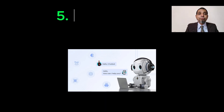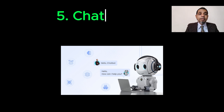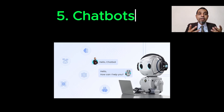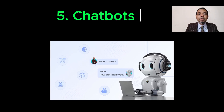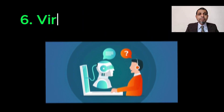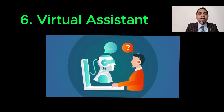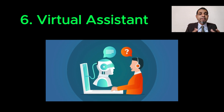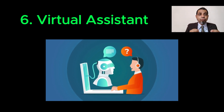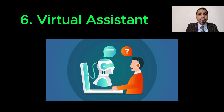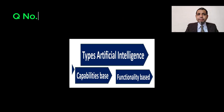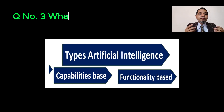Number five, chatbots — most people use ChatGPT or different GPT-based chatbots in their daily life. Number six, virtual assistants — most call centers and websites have presented virtual assistants to assist and resolve the complaints of customers and users.